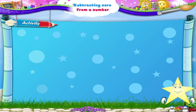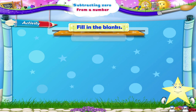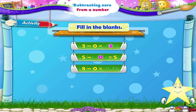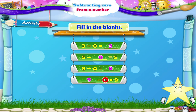Now, in this activity, we have to fill in the blanks. Three minus zero equals blank. Three minus zero equals three. Five minus blank equals five. Five minus zero equals five. Eight minus zero equals blank. Eight minus zero equals eight. Blank minus zero equals nine. Nine minus zero equals nine. Four minus blank equals four. Four minus zero equals four.